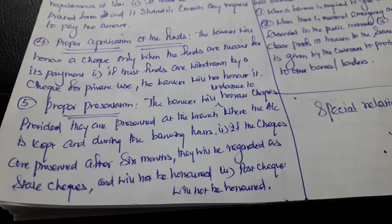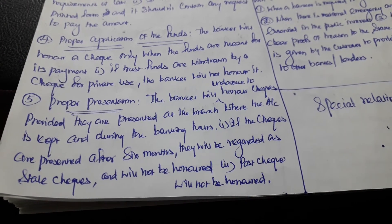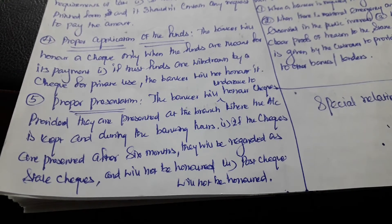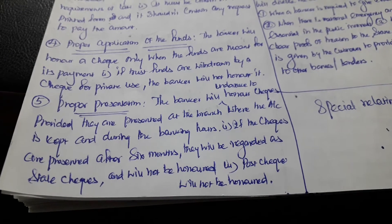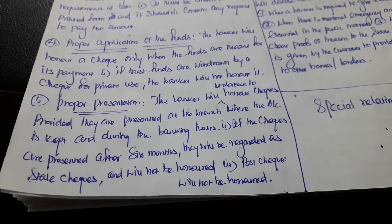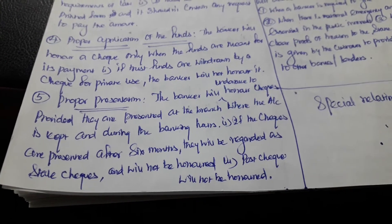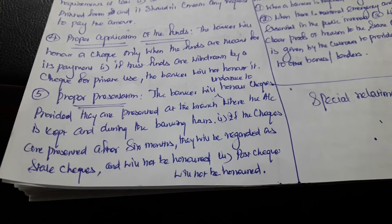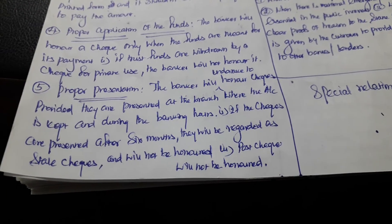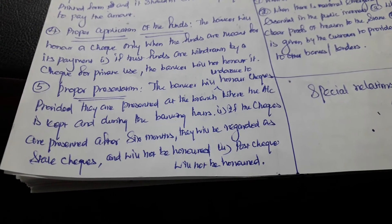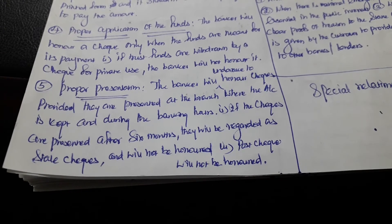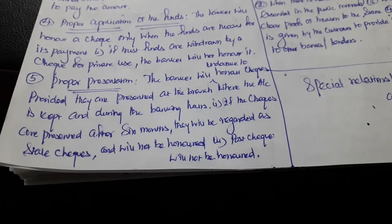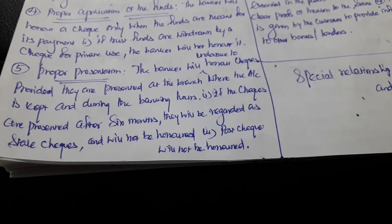The next obligation is proper presentation. The banker will honor checks provided they are presented at the branch where the account is kept and during banking hours. The check should be submitted at the same branch where the customer opened the account and during working hours. If checks are presented after six months, they will be recorded as stale checks — they are out of the date of maturity and will not be honored. Post-dated checks will also not be honored; a post-dated check means it carries a preceding date before the maturity date.